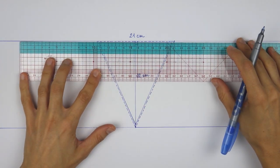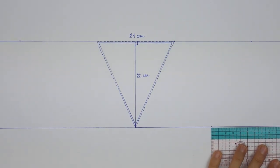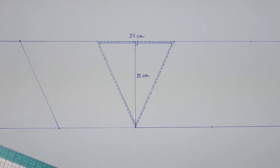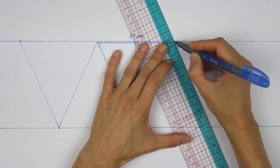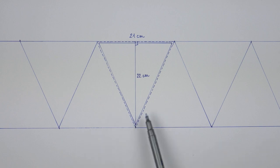On the stripes, we will place marks corresponding to the width of our triangle, seam allowance included, and join them in order to form several triangles placed head to tail. This technique will save us as much fabric as possible and make the cutting process easy and smooth.